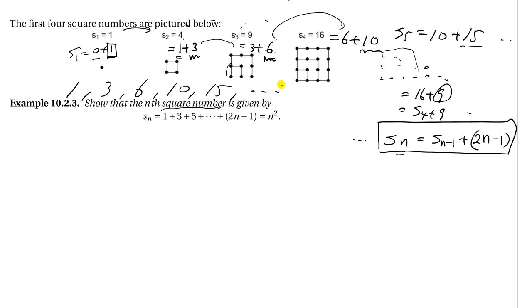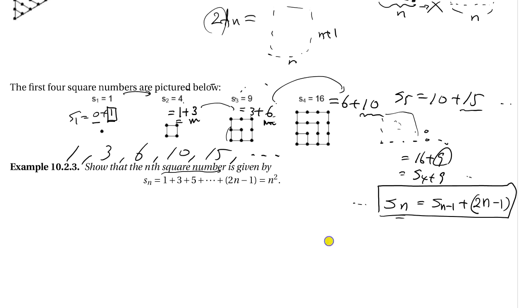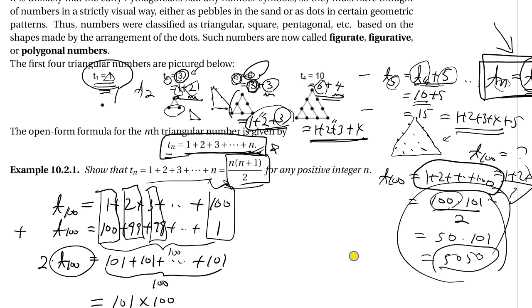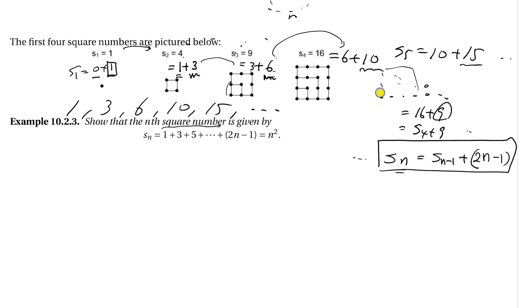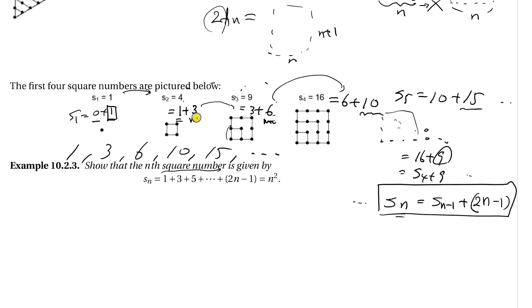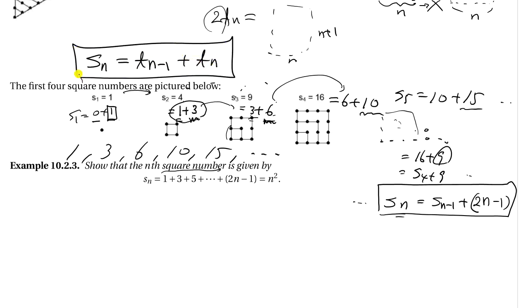Do those numbers look familiar? 1, 3, 6, 10, 15 — we saw these just a few minutes ago. Those are triangle numbers! So to get a square number, all we need is the sum of two consecutive triangle numbers. For arbitrary S_n, we have S_n = T_{n-1} + T_n.